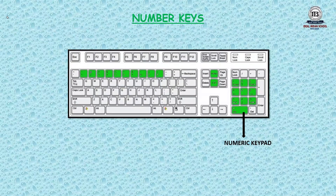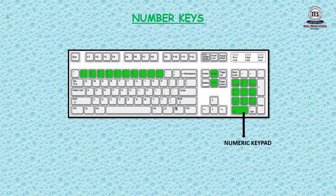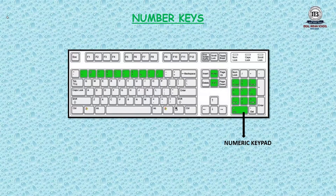Number keys: the keys marked with digits 1 to 9 and 0 are the number keys. There are 10 in number. They are used to type numbers and digits. Note that number keys are present at two places on the keyboard: above the upper row of the alphabet keys and on the far right of the keyboard. This is also called the numeric keyboard.